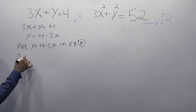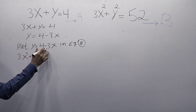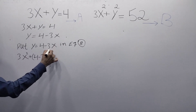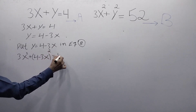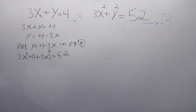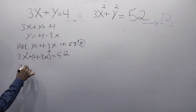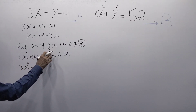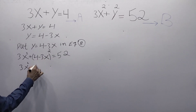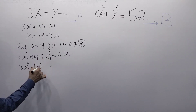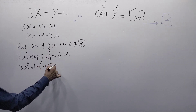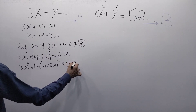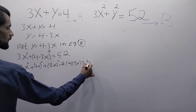Equation B is 3x squared plus y squared equals 52. Substituting y equals 4 minus 3x, we get 3x squared plus (4 minus 3x) squared equals 52. Expanding using the identity (A minus B) squared equals A squared plus B squared minus 2AB.